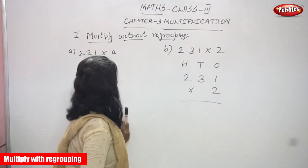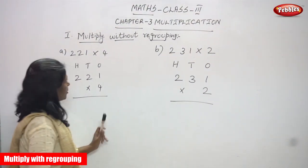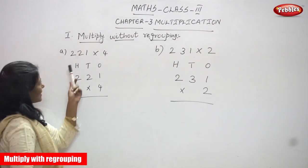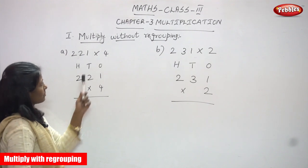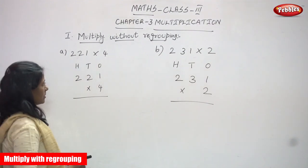Now we are going to see multiply without grouping. This is a three digit number multiplied by a single digit number.